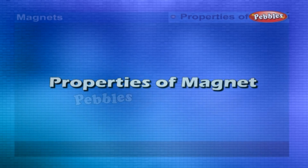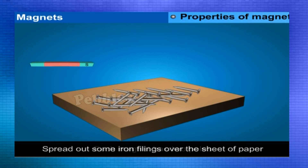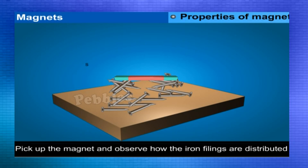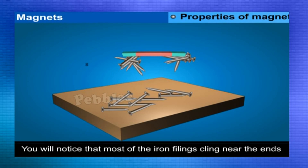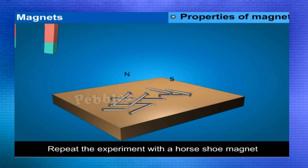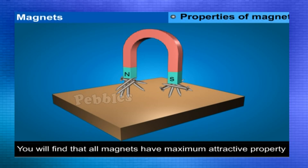The two ends of a magnet where the magnetic force is greatest are called the poles of the magnet. Each magnet has two poles. Spread out some iron filings over a sheet of paper and move a bar magnet through the filings. Pick up the magnet and observe — most of the iron filings cling near the ends while there are few near the middle. The same holds true for a horseshoe magnet: all magnets have maximum attractive force at their poles.